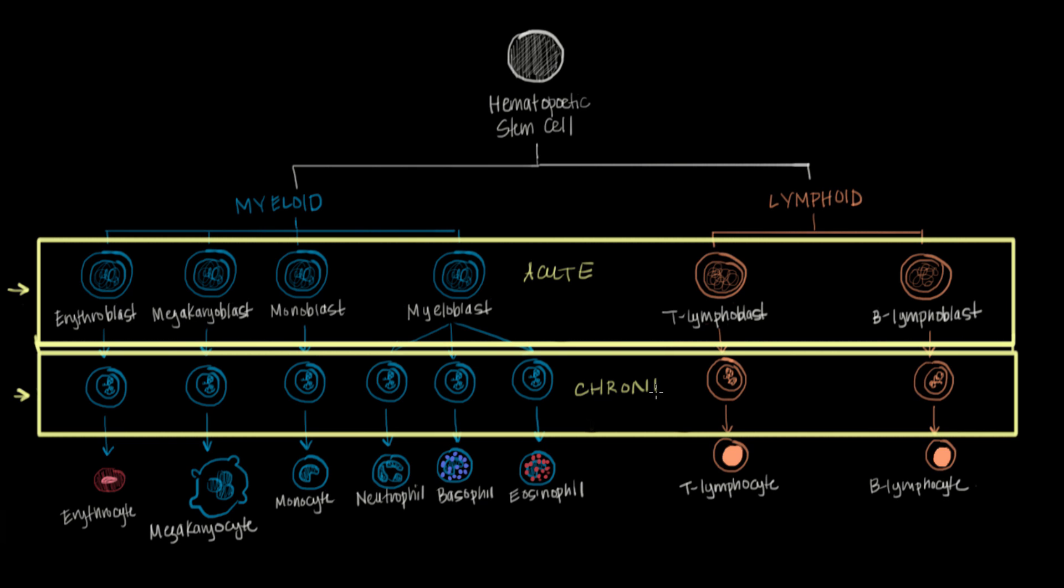So, the first way to split up the leukemias is by how immature the originating cell is. So, what do the words acute and chronic have to do with maturity? That seems like a really random word choice, right?